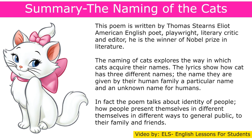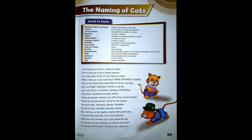The Naming of Cats explores the way in which cats acquire their names. The lyrics show how a cat has three different names: the name given by their human family, a particular name, and an unknown name for humans. In fact, the poem talks about the identity of people — how people present themselves in different ways to the general public, and to their family and friends. First of all, words to know.